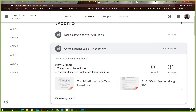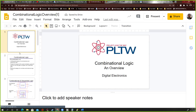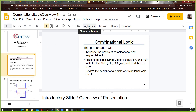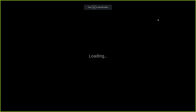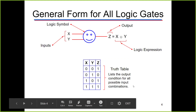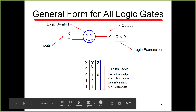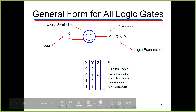Now let's come back and look at a worksheet — here's a PowerPoint we can open with Google Slides. Combinational logic means you put inputs in and get outputs. Sequential logic means you put inputs in, there are outputs, but there's also feedback. We're doing combinational logic right now. In general you have inputs, outputs, and a logic expression, and every logic symbol has its own truth table.